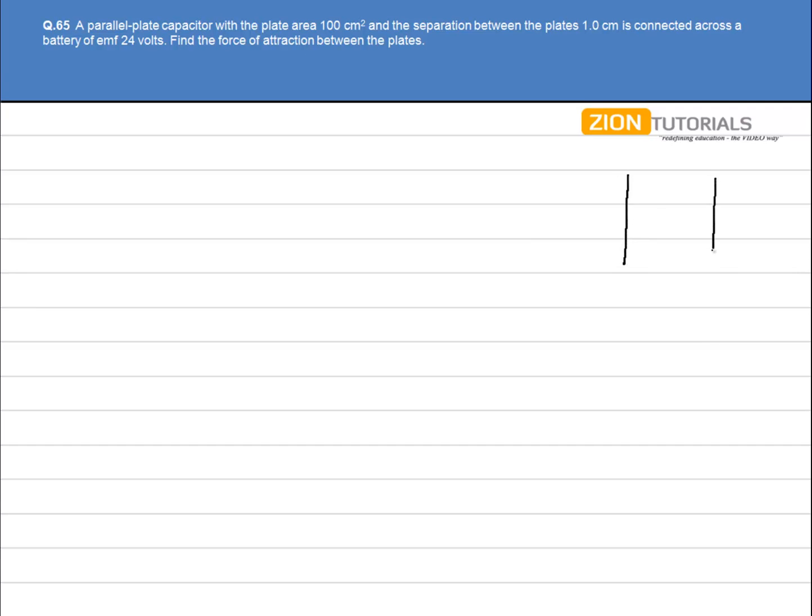Let's say I have plates and the potential difference between point a and b is 24 volts. Now we know that electric field due to a plate is given by sigma by 2 epsilon not.